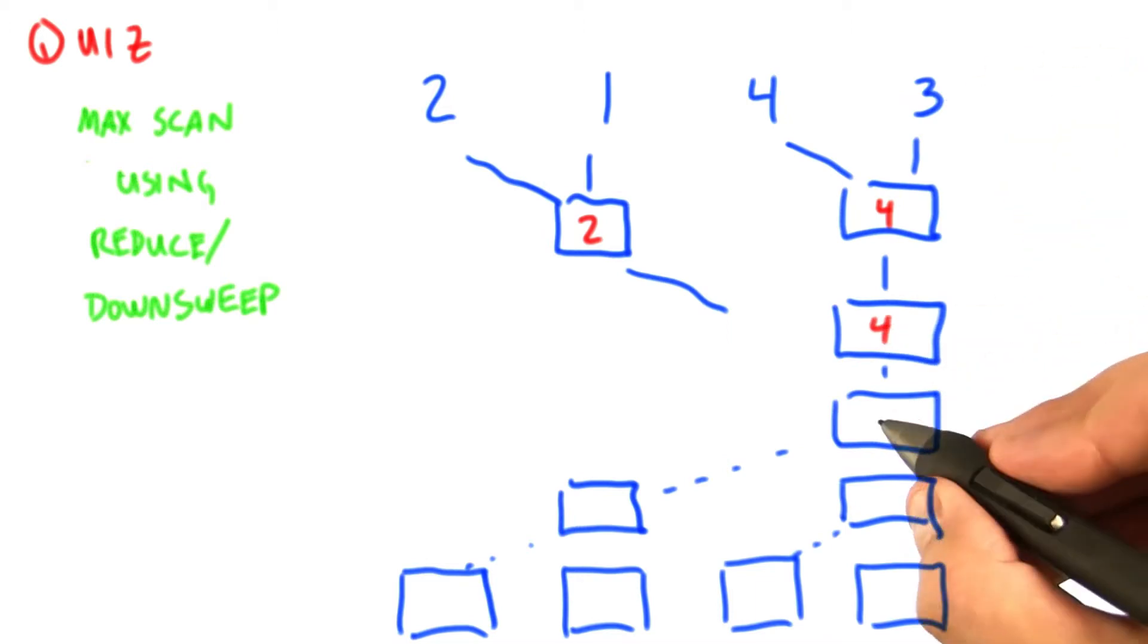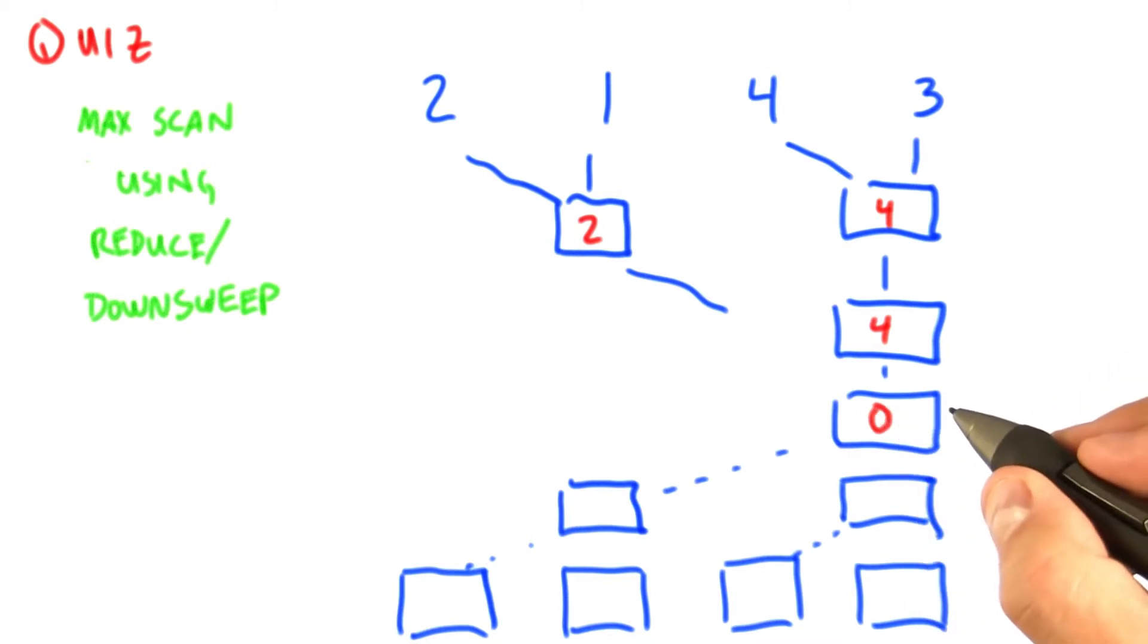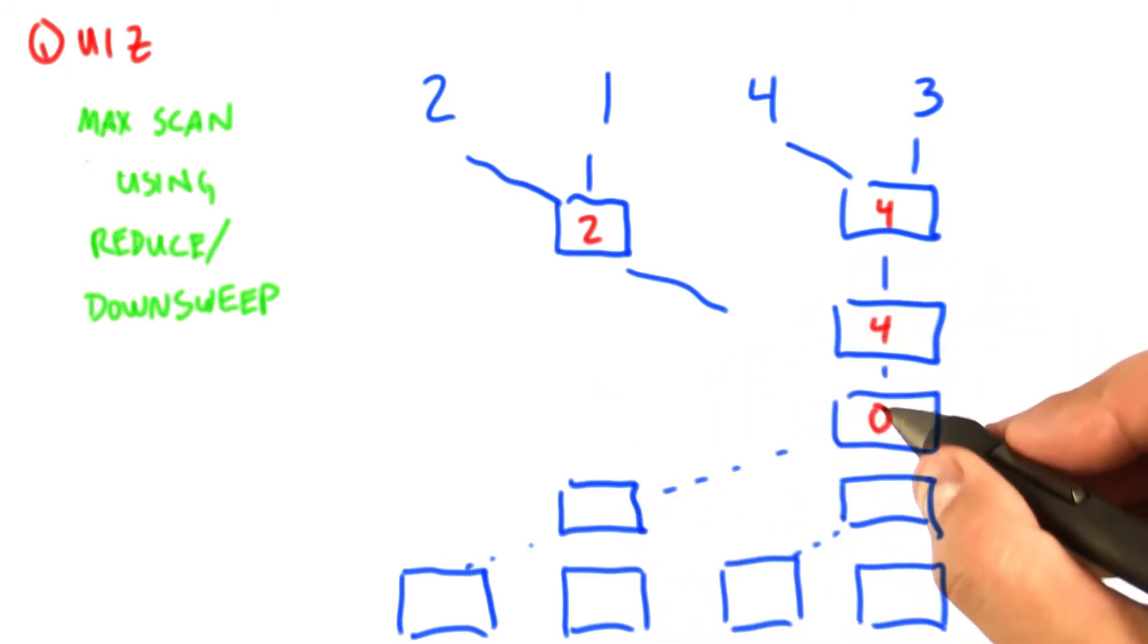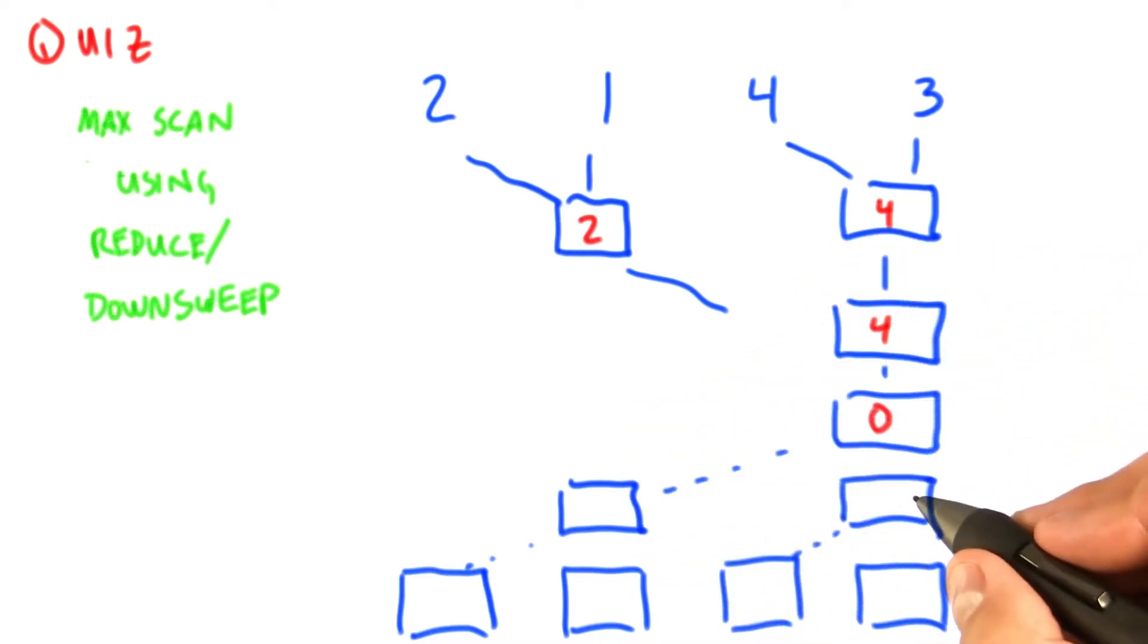So now we begin the downsweep. Remember we start with the identity element here, and then we're going to apply the downsweep operator. In this case, we're doing a downsweep with a max, so we will copy to the left just as in the sum example, and we will apply max to each of the pairs of elements to create the output to its right.